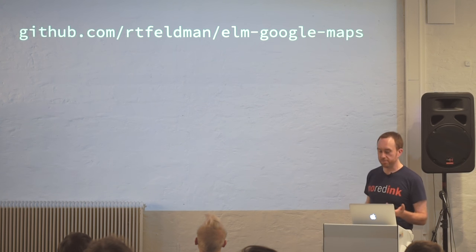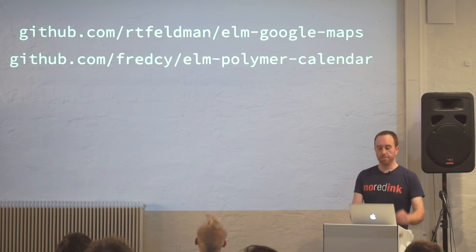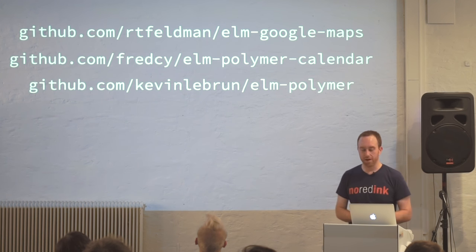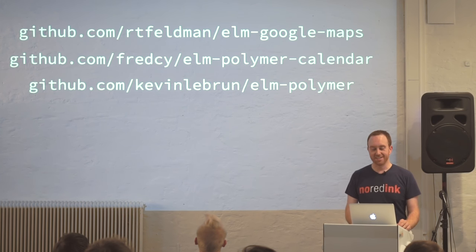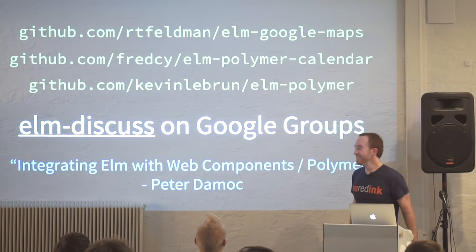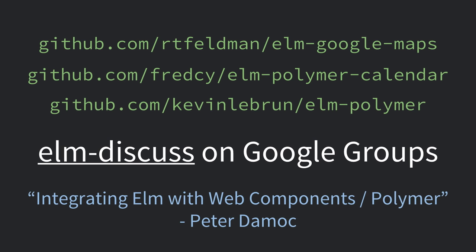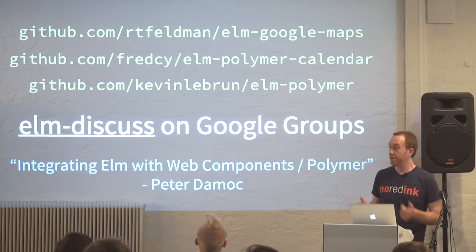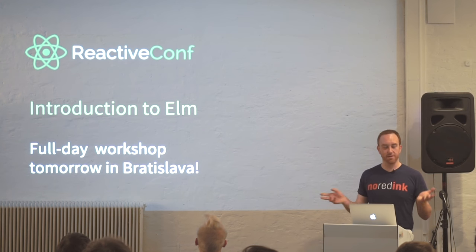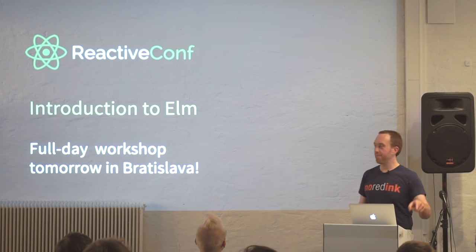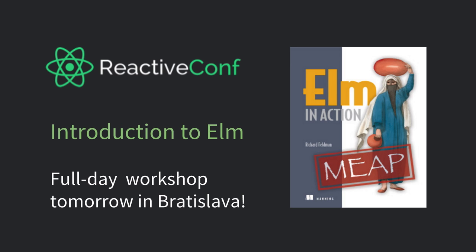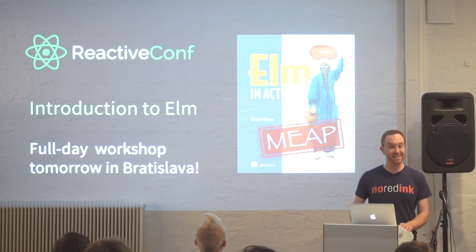If you want to look at the code I just demoed, it's on GitHub: RT Feldman slash elm-google-maps. There's also Fred's Elm Polymer calendar, which is what I based this on. Kevin Lebrun had a whole talk about Elm Polymer a while back — it's in French, so only a subset of the audience will understand it. Also, shout out to the Elm Discuss Google Groups thread started by Peter Damach on integrating Elm with Web Components and Polymer — that's basically where I got all the info for this talk. ReactiveConf is happening soon and I'm teaching an introduction to Elm tomorrow. I'm also writing a book, Elm in Action, for Manning. I work for No Red Inc — we're hiring, about half our team is remote, so please let me know if you're interested. Thanks very much.